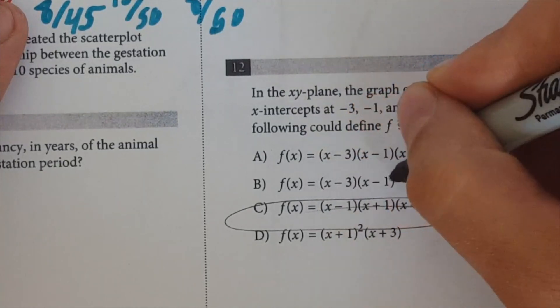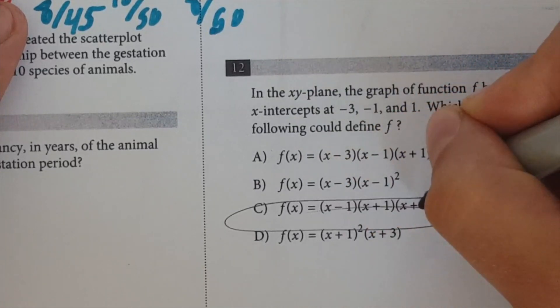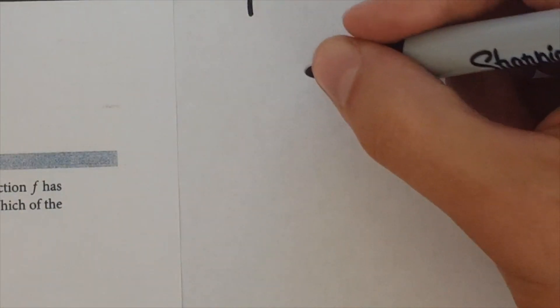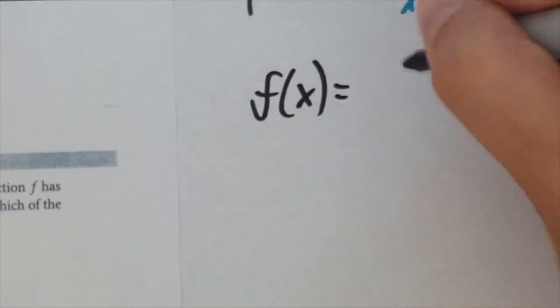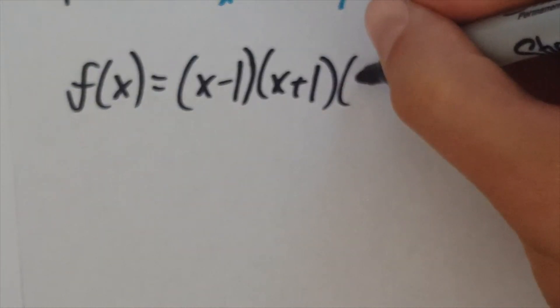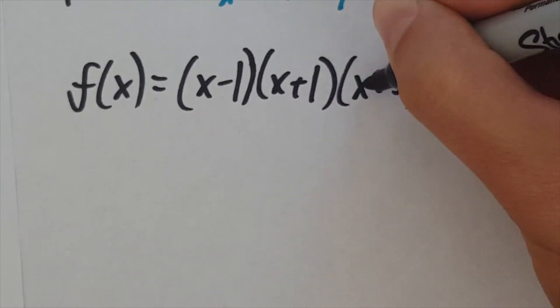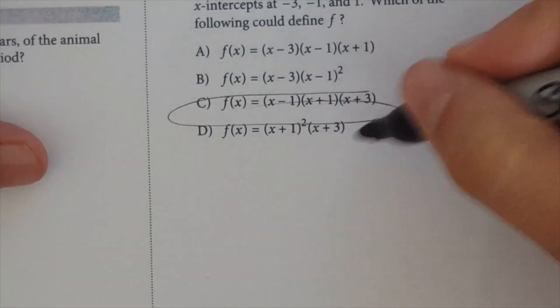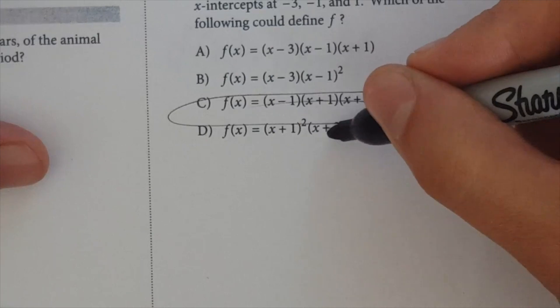If you plug in minus 3 to B, you're not going to get a 0. If you plug in a minus 3 to C, you're going to have, let me do it on the paper right here. You're going to have, f of x equals x minus 1 times x plus 1 times x plus 3. But because x is minus 3, this is going to be 0. And since you have 0 times something, that's going to be 0. So that works. And it actually works for D also because here's plus 3. So minus 3 plus 3 is 0. So that's going to work.